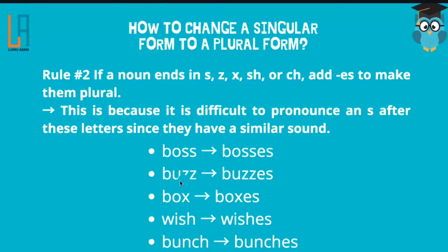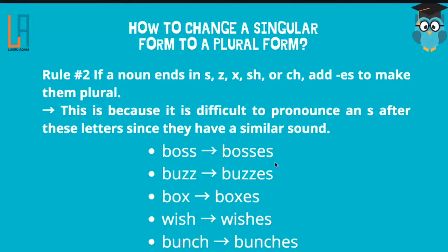Next, box ends in X, so you add ES — it becomes boxes. Wish: add ES, it becomes wishes. Bunch becomes bunches. So that's rule number two: if the noun ends in S, Z, X, SH, or CH, you have to add ES.